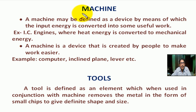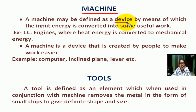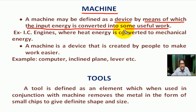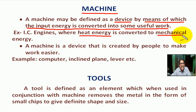First, we learn what is a machine. A machine may be defined as a device by means of which the input energy is converted into some useful work. For example, an IC engine — internal combustion engine — where heat energy is converted to mechanical energy.